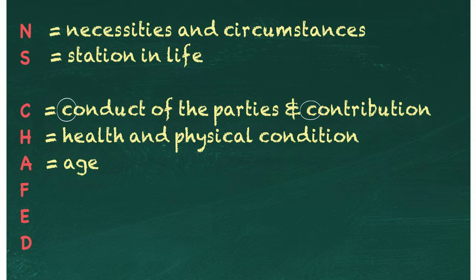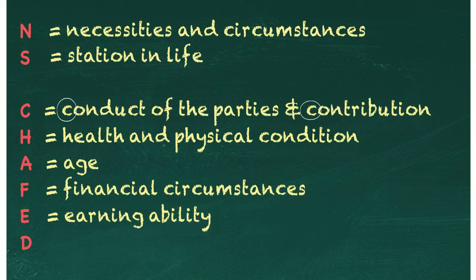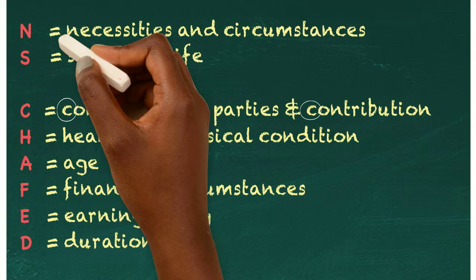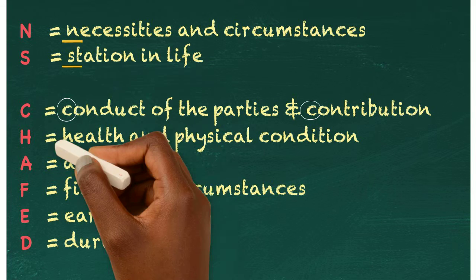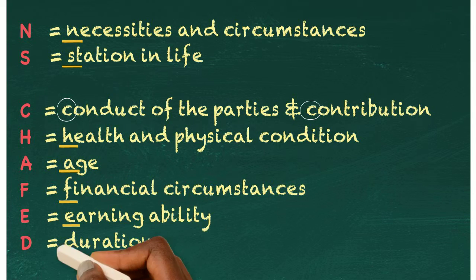F is for financial circumstances. E is for earning ability. And D is for duration of the marriage. Study well!